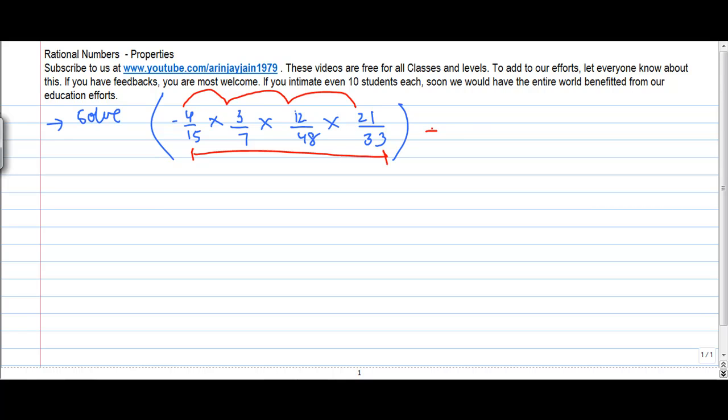But I know one property of associativity, which says that for rational numbers, the order of grouping in multiplication doesn't matter.